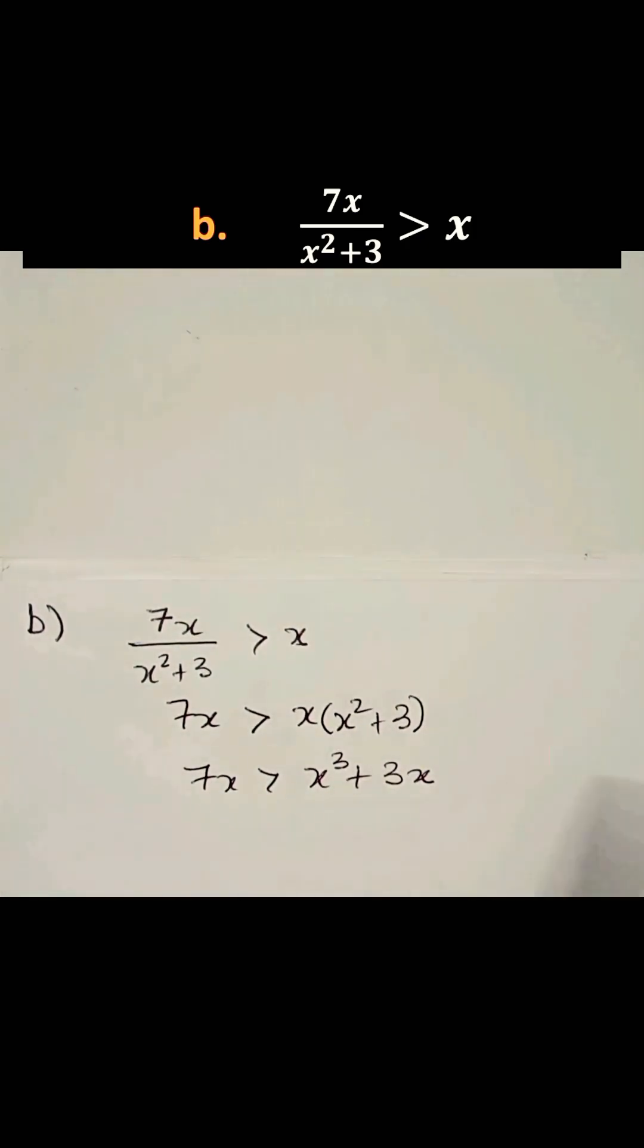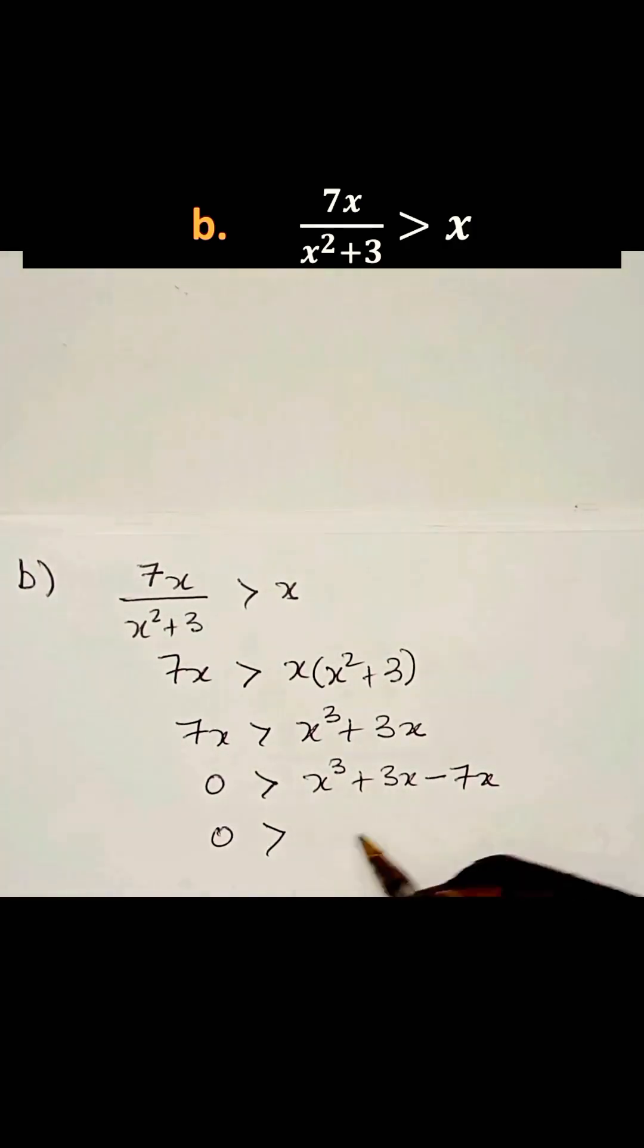Then we take the 7x to the other side. We have 0 is greater than x³ + 3x - 7x. Then we say 0 is greater than x³ - 4x.